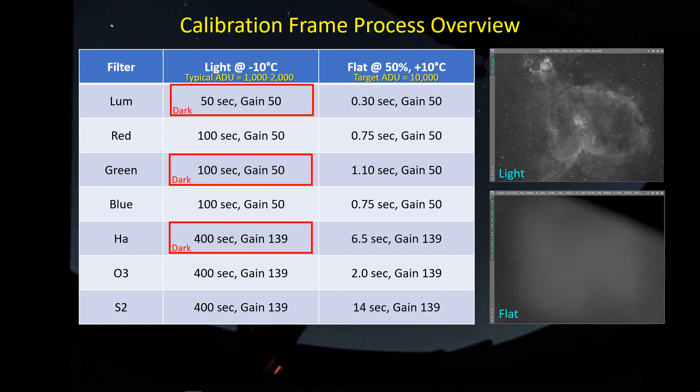In my light frames, I'm getting an ADU level between 1 to 2,000. Here the idea is just to keep the peak of the histogram of your light frame off the left edge, and yet not so far off to the right that you start clipping the brightness of many or most of the stars in the field.